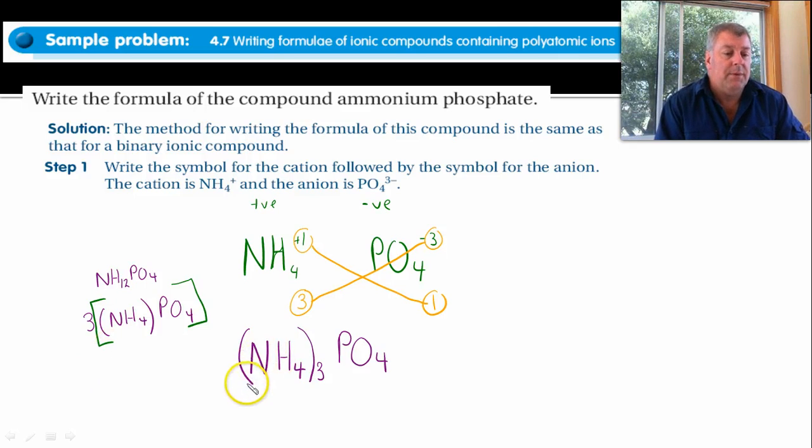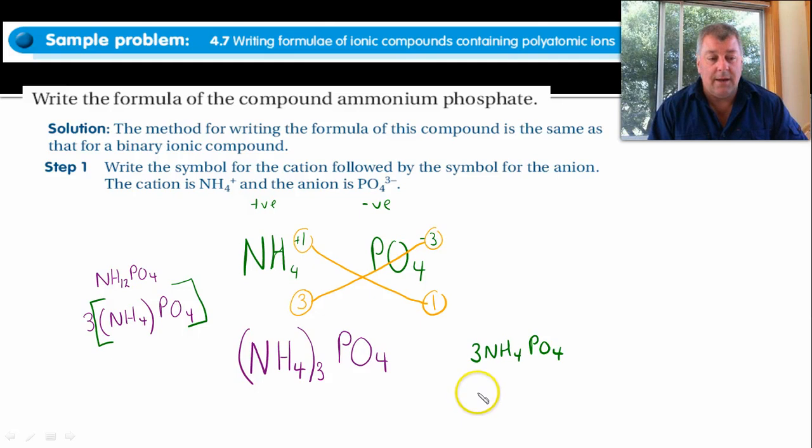What's another mistake people make? There you go. They don't even put it in brackets. That's another one. 3NH4PO4. That's not the right thing. That's just saying three of this formula, which is something we have no idea about. And you'll probably come up with some other ones, but they're all wrong.